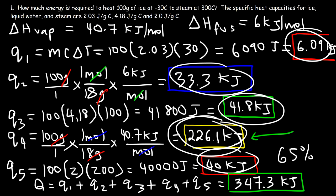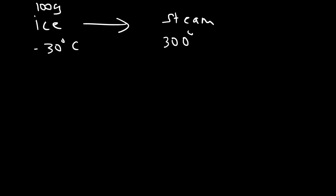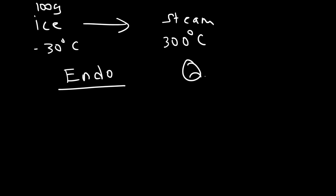This total is a positive value because heating ice at negative 30 Celsius to steam at 300 Celsius requires putting energy into the system — it's an endothermic process, which is why the total heat energy is positive.